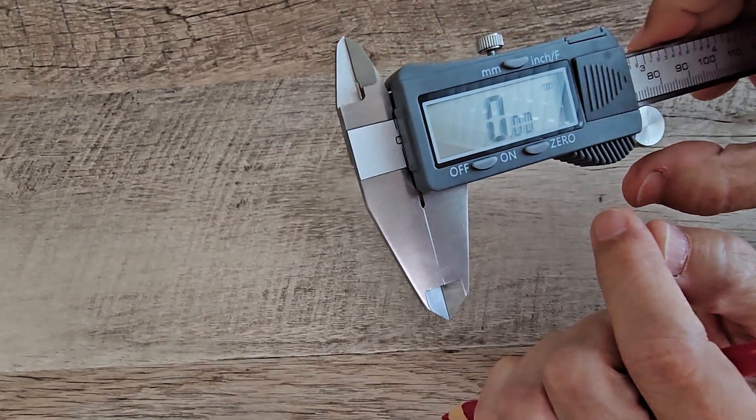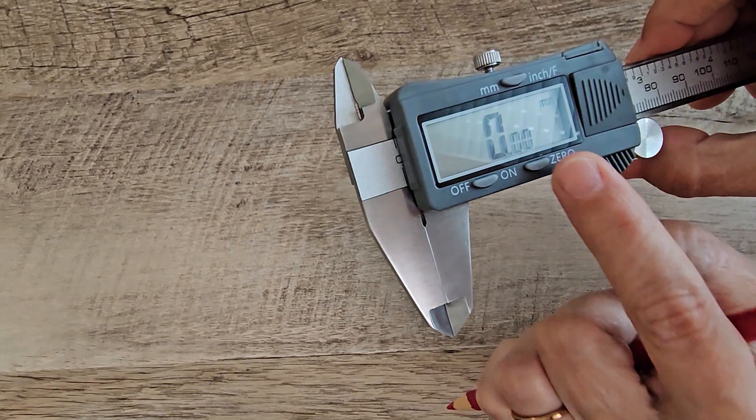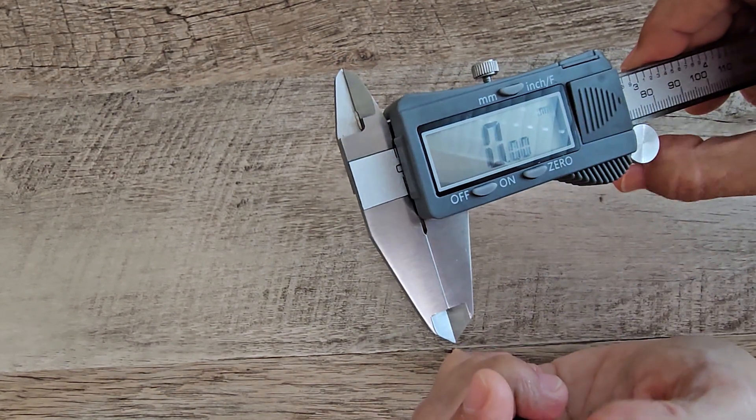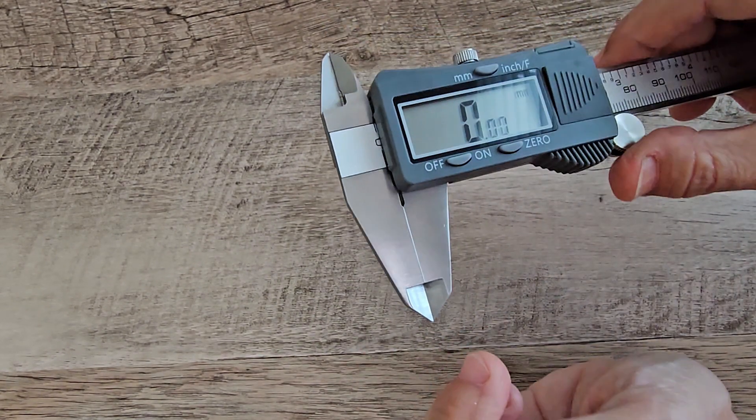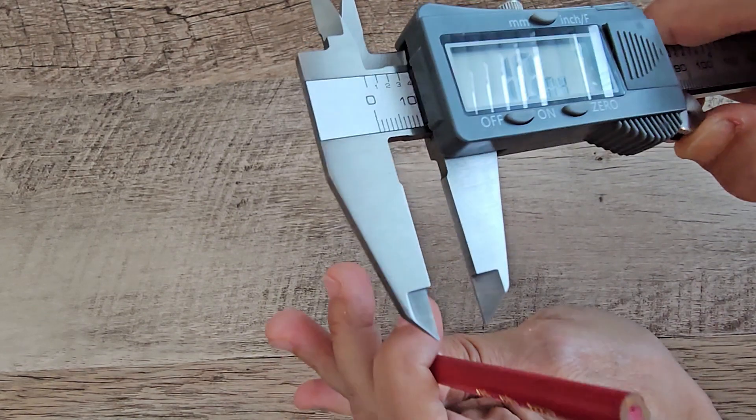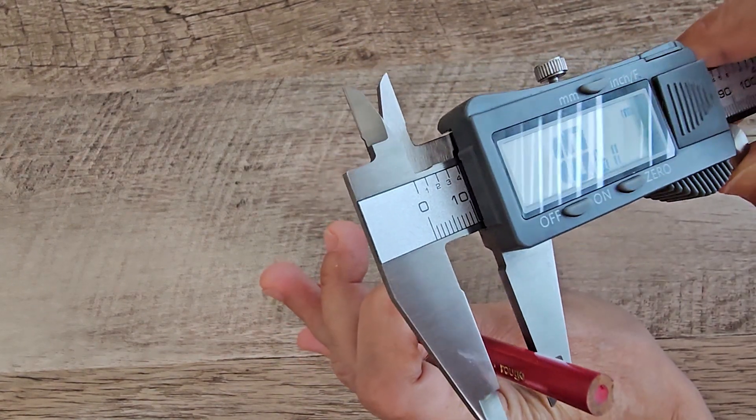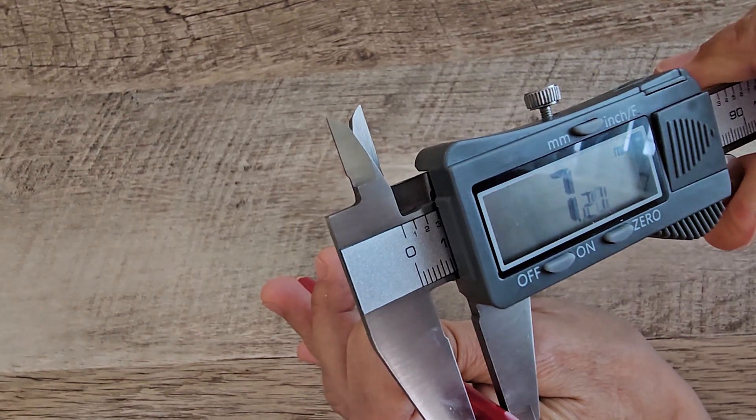An example of an outside measurement. Always make sure you zero out first. I'm going to leave it in millimeters. The bigger claw is used for outside measurements. So there's our diameter.